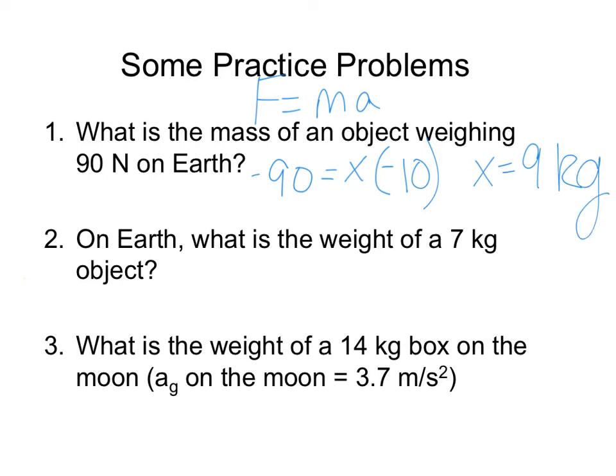On earth, what is the weight of a 7 kilogram object? Again, if we're going to do F equals MA, our M is 7 kilograms, our A is negative 10 meters per second squared. So, that means that the weight on earth is negative 70 newtons.